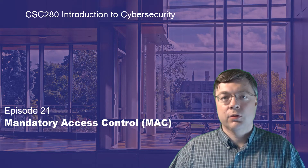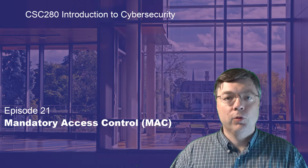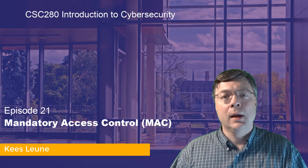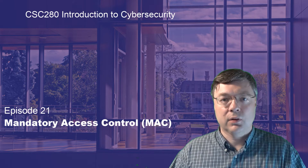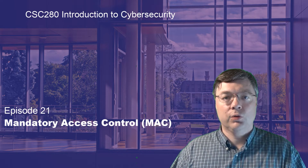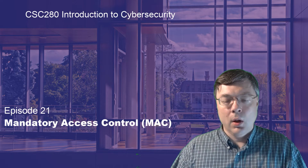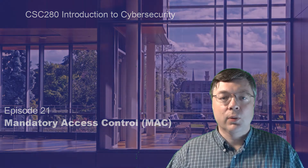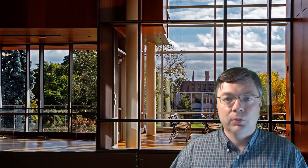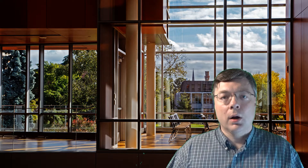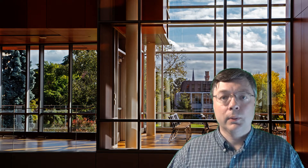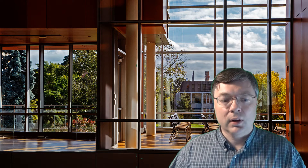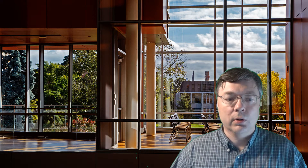Welcome back to CSC 280 Introduction to Cybersecurity. Today we continue our discussion about access control and in particular we start exploring the mandatory access control model. In the previous video we talked about discretionary access control, in which the owner of a resource controls full access to that resource. What we've figured out is that while it is a model that's easy to learn and easy to implement, it does have some drawbacks — primarily that it does not scale very well, and secondly that it needs to assign trust to each owner in a system.